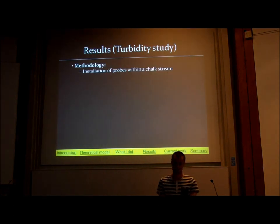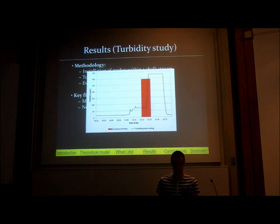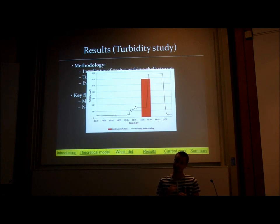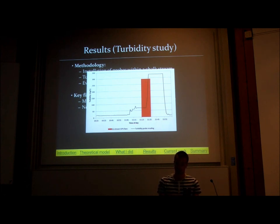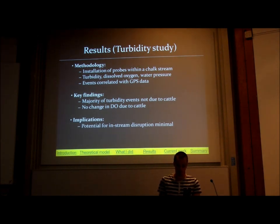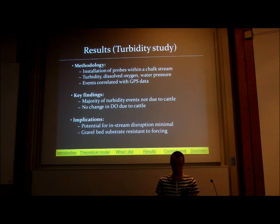The turbidity study — this graph shows turbidity on the axes with an instance of cattle being in-stream shown by the red bar. When cattle are in-stream, we get an increase in in-stream turbidity, which is a proxy for fine sediment — or suspended sediment more specifically. So cattle can enter the river, cause disruption, and increase in-stream suspended sediment. However, we didn't find many correlations; that graph was the only real incident despite monitoring for months and months, so further research is required.